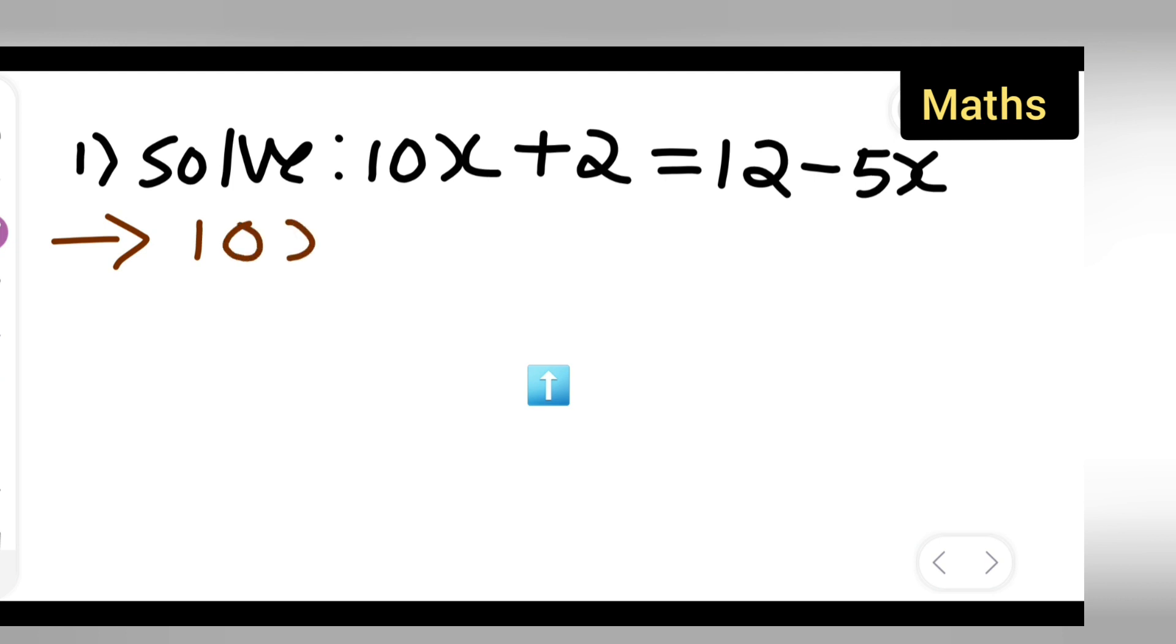So first, let me write the equation as it is. 10x plus 2 is equal to 12 minus 5x.